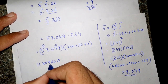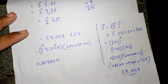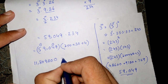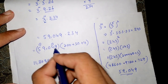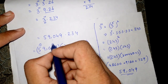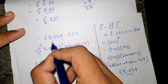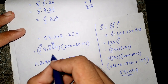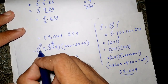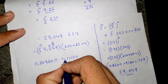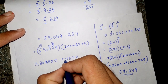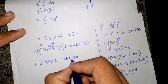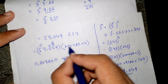For 30: 3 times 9 is 27, carry 2; 3 times 4 is 12 plus 2 is 14, carry 1; 3 times 0 is 0 plus 1 is 1; 3 times 9 is 27, carry 2; 3 times 5 is 15 plus 2 is 17. So the 30 partial product is 1,771,470. For 4: 4 times 9 is 36, carry 3; 4 times 4 is 16 plus 3 is 19, carry 1; 4 times 5 is 20 plus carry, giving 236,196.